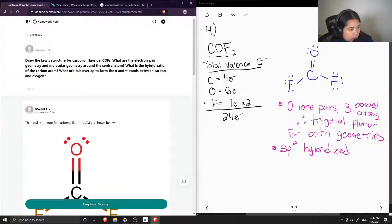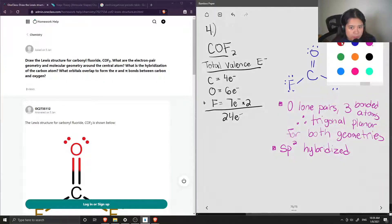So we have this answered, we have the hybridization answered, and now what orbitals overlap to form sigma and pi bonds between carbon and oxygen?